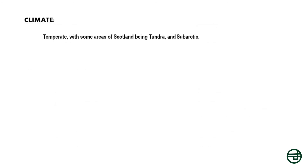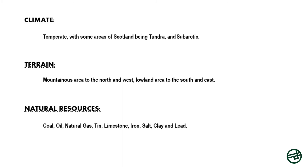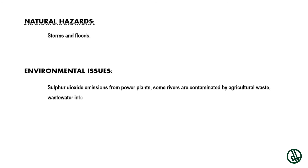Climate: temperate, with some areas of Scotland being tundra and subarctic. Terrain: mountainous area to the north and west, lowland area to the south and east. Natural resources: coal, oil, natural gas, tin, limestone, iron, salt, clay, and lead. Natural hazards: storms and floods. Environmental issues: sulfur dioxide emissions from power plants, some rivers are contaminated by agricultural waste, and wastewater discharged into the sea.